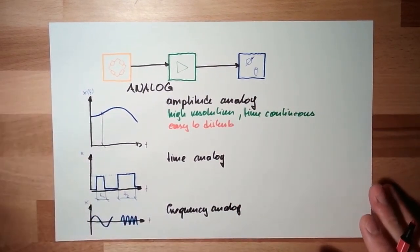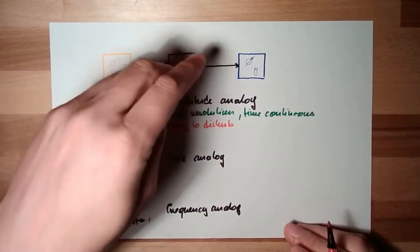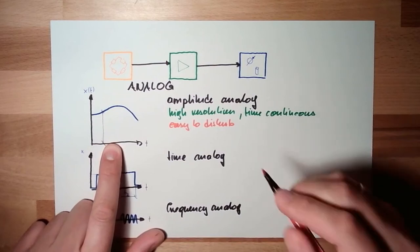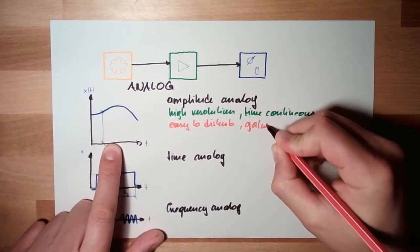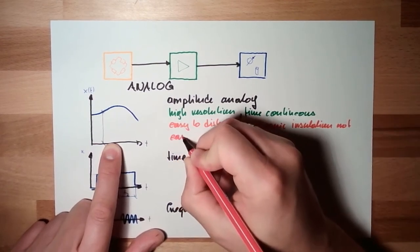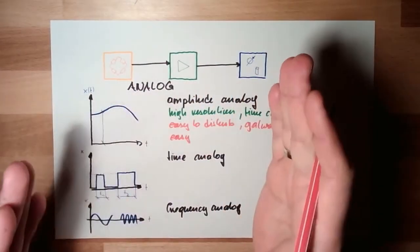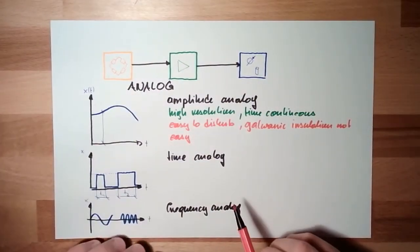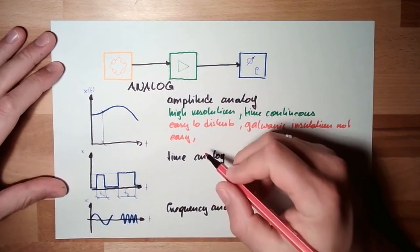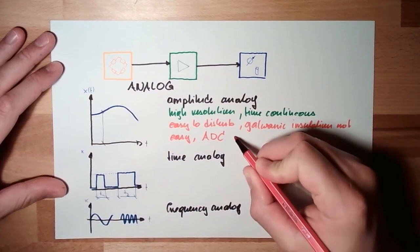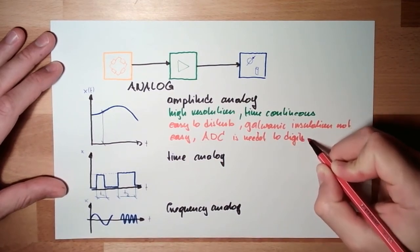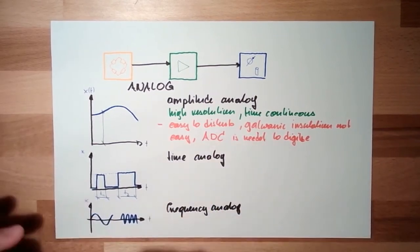Further disadvantages of amplitude analog: if I want a galvanic insulation somewhere in between, that's not very easy with amplitude analog signals. Also, if I want to read it into a computer and digitize it, that's hard - I need an analog-to-digital converter, an ADC, to digitize the signal.